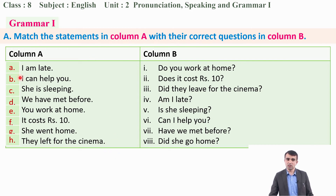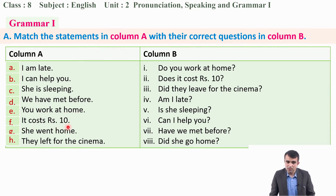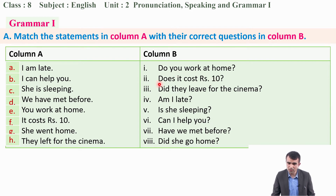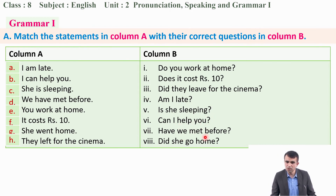The statements in column A are: A — I'm late; B — I can help you; C — She is sleeping; D — We have met before; E — You work at home; F — It costs rupees 10; G — She went home; H — They left for the cinema. The questions in column B are: Do you work at home? Does it cost rupees 10? Did they leave for the cinema? Am I late? Is she sleeping? Can I help you? Have we met before? Did she go home?